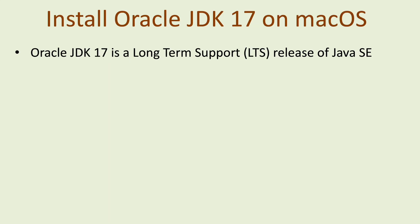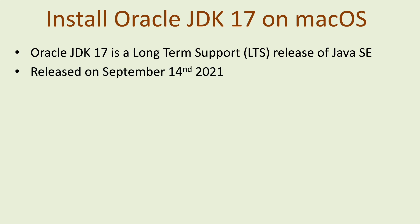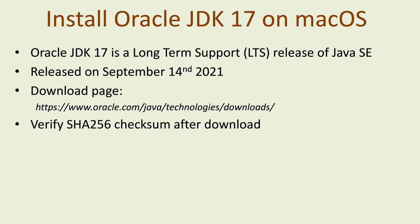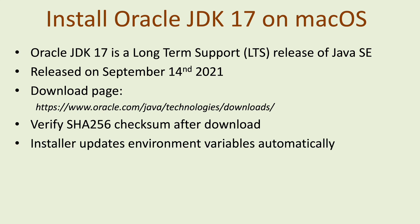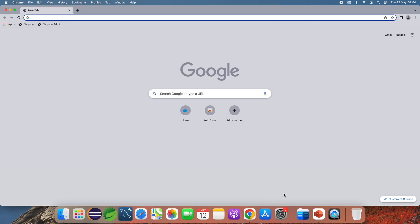Oracle JDK version 17 is the long-term support (LTS) release of Java SE — it was released on September 14th, 2021. This is the official download page of Oracle JDK. You should verify the SHA-256 checksum after download. Note that the installer updates the environment variables automatically, so the installation of Oracle JDK 17 on macOS will be quick and easy.